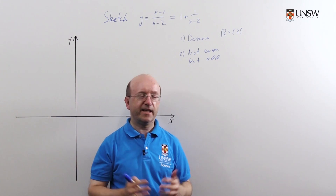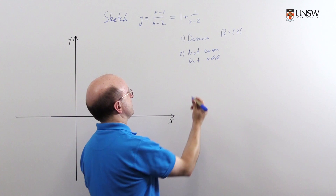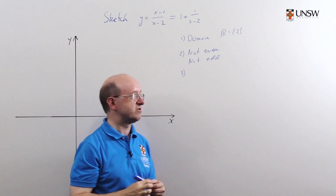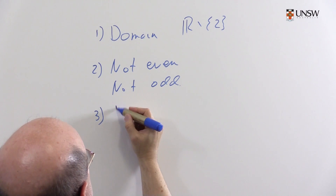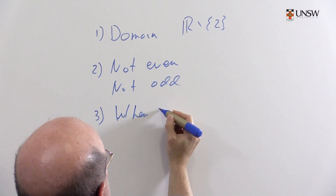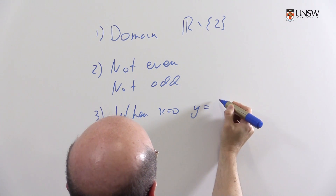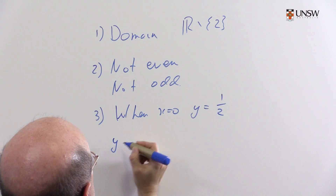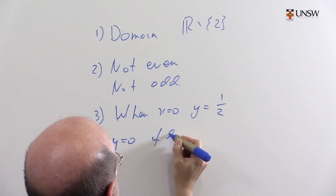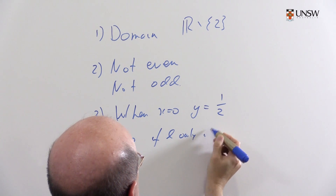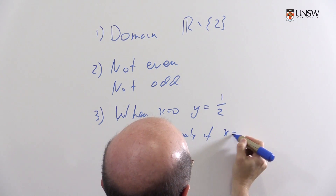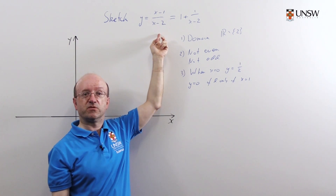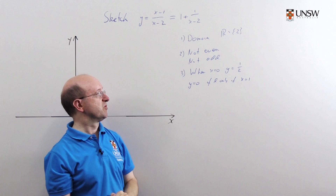The next thing we want are the intercepts — where does it meet the axes? When x equals 0, y is simply one half. And y equals 0 if and only if x equals 1. I'm using the first version of the function here because that's the easiest one to find the intercepts.